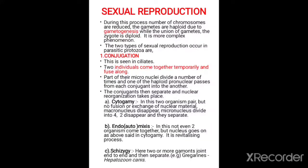Now let us come to the sexual reproduction in the protozoans. During this process there is reduction of number of chromosomes and the haploid gametes fuse to form the diploid zygote.